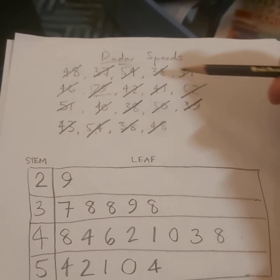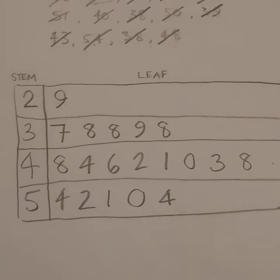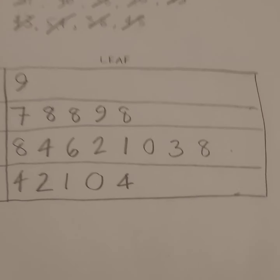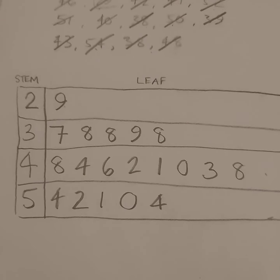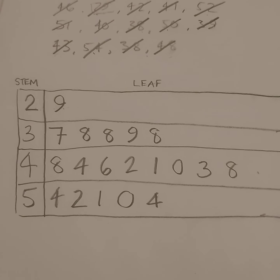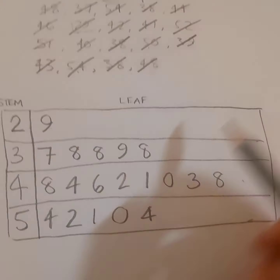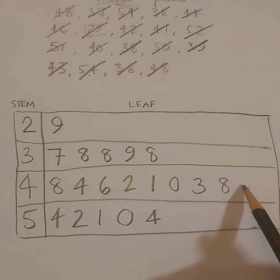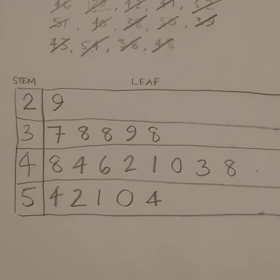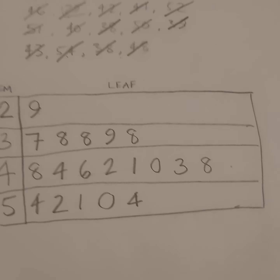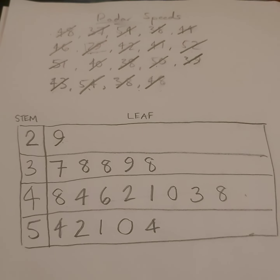All the numbers from the original data set have now been represented in this stem and leaf plot. Right away, just by reorganizing the data, I can easily say that most cars seem to be in the 40s — look how many numbers appear there. A few are above 50, some are in the 30s. So that tells you something about the data. I'm going to show you in a moment how to do the calculations with this.